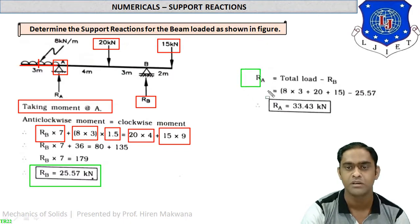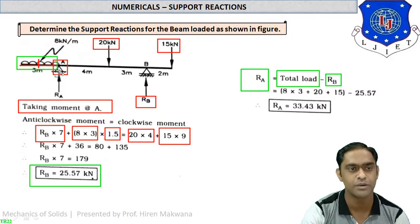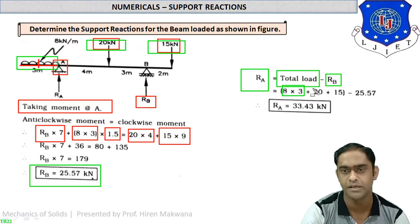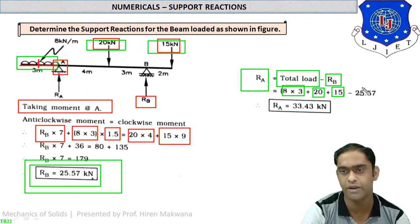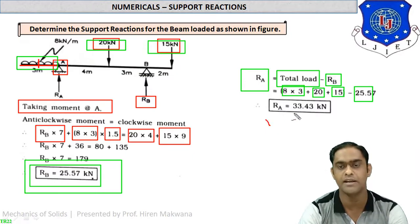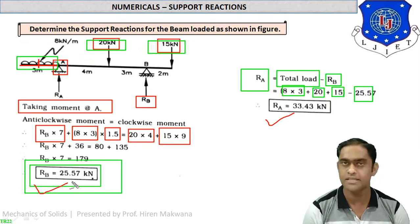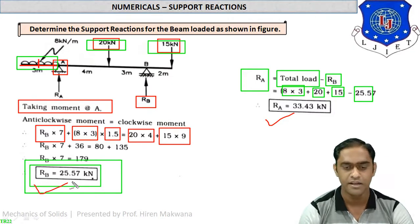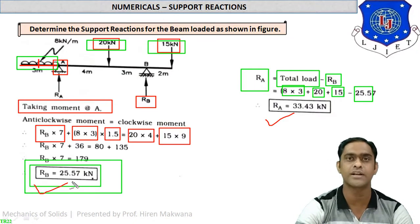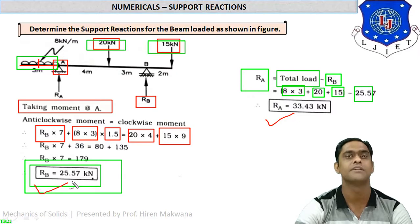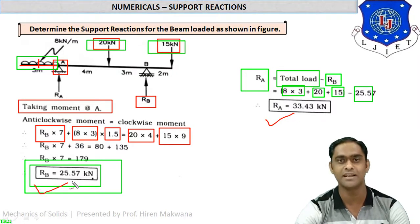Using vertical equilibrium: RA = total vertical load − RB. Total load = 24 + 20 + 15 = 59 kN. Therefore RA = 59 − 25.57 = 33.43 kN. In today's lecture we solved three numericals, all based on vertical reactions only. In the next lecture, we will cover examples with triangular (UVL) loading and inclined forces. Thank you.